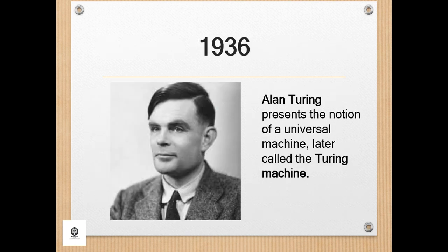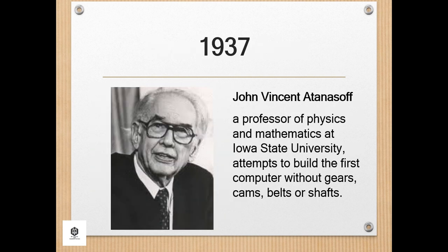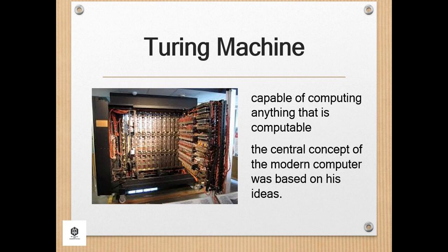During 1936, Alan Turing presented the notion of a universal machine, later called the Turing machine, which is capable of computing anything that is computable. The central concept of the modern computer was based on his idea.